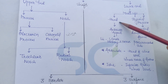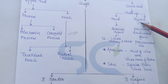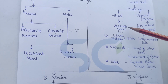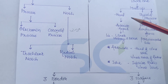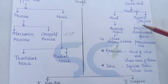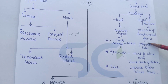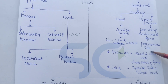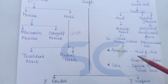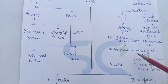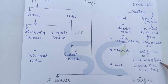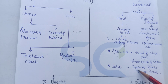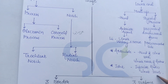The ulnar artery and nerve lie in the anterior aspect of the head, and the styloid process is projected downward from the posterior medial side. The head of the ulna articulates with the ulnar notch of the radius, forming the inferior radio-ulnar joint.